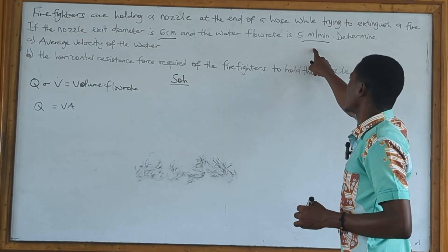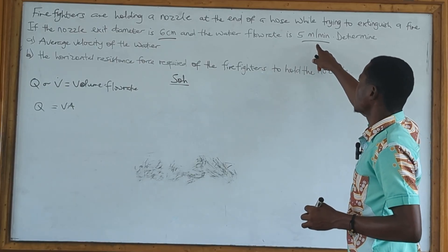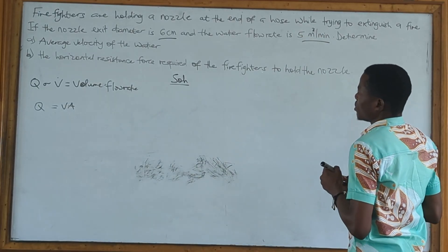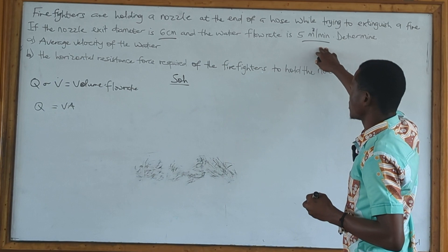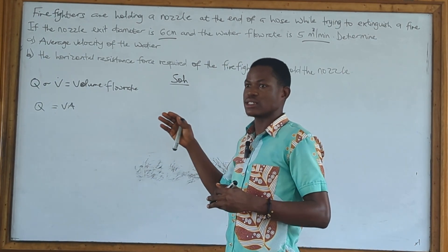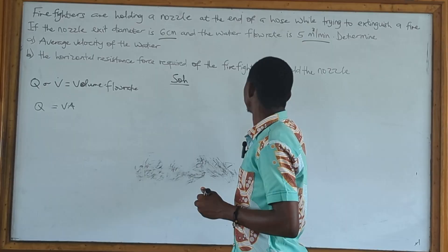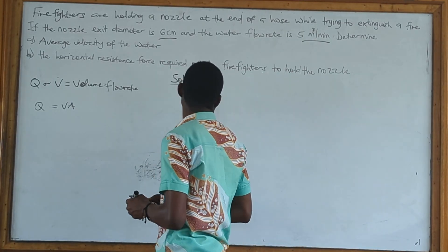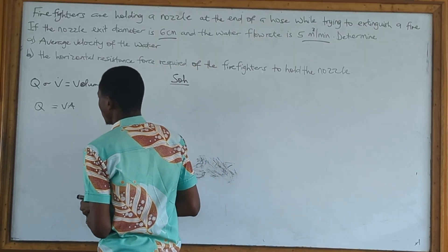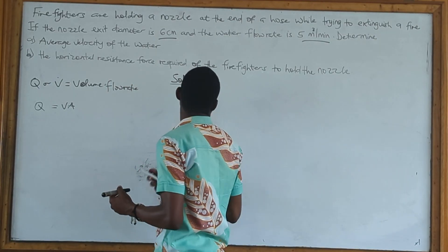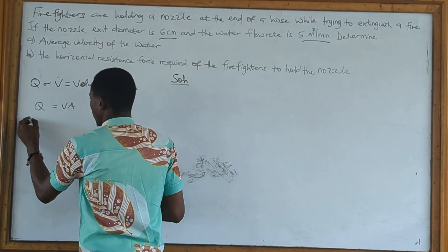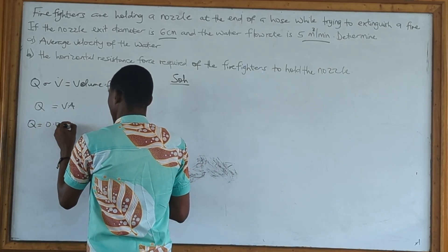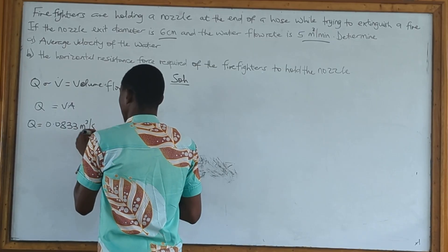We've been given Q, but it's in meters cubed per minute and we want it in meters cubed per second. So we convert that 5 meters cubed per minute by dividing by 60. Our Q is therefore equal to 0.0833 meters cubed per second.